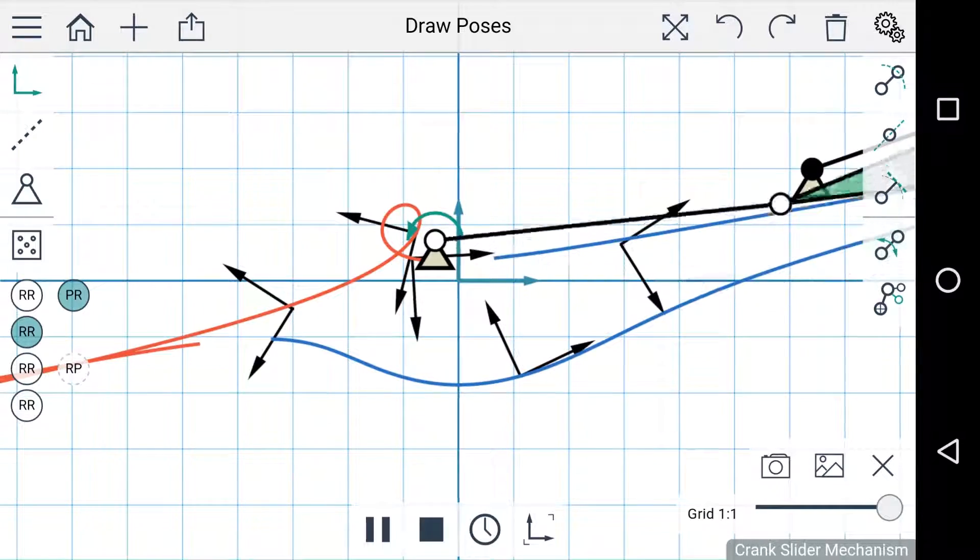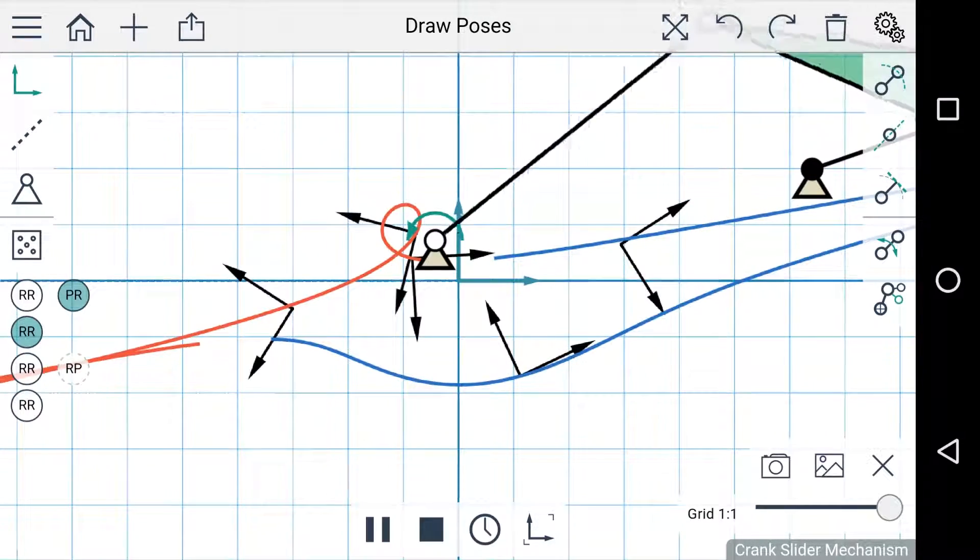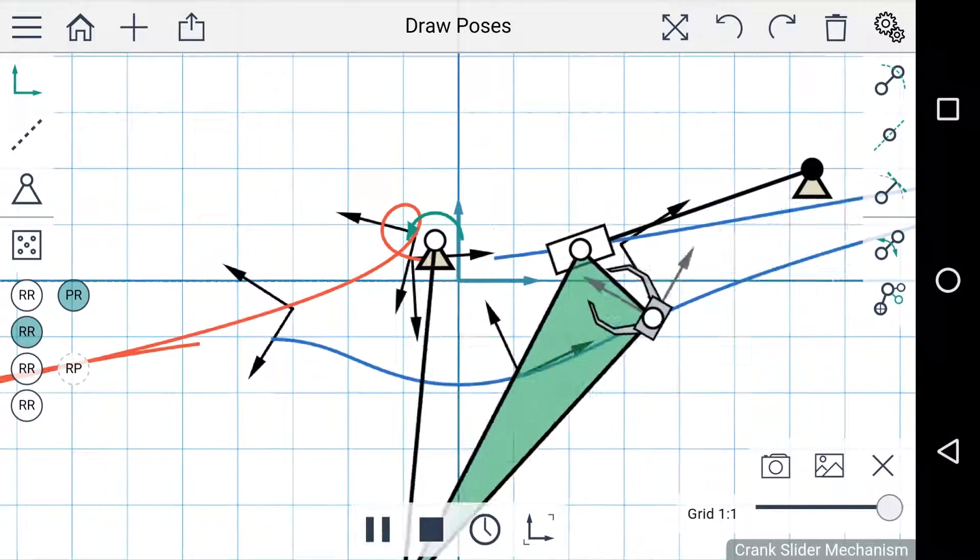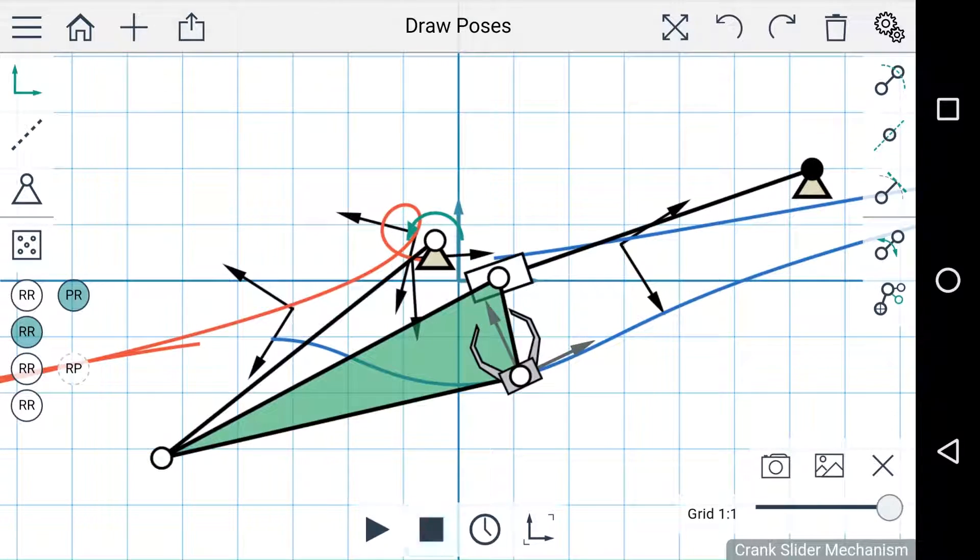You can see here that the motion is still very similar to the 4R linkage. Now the size and tolerance of the workspace will actually affect how these dyads are interpreted.